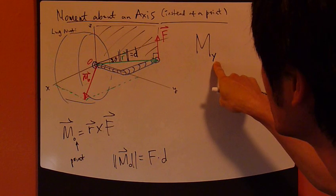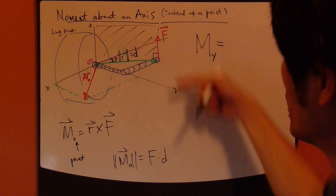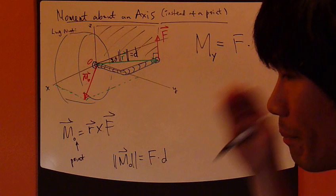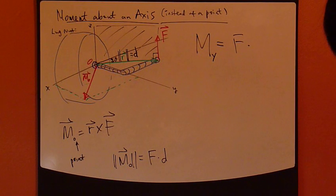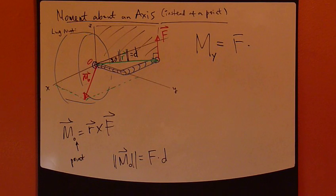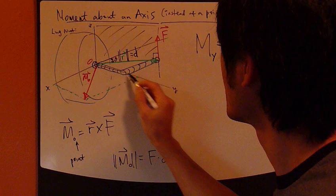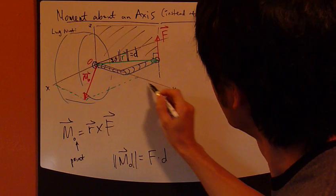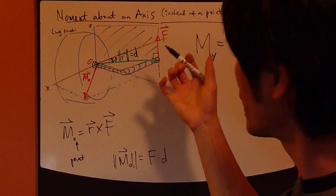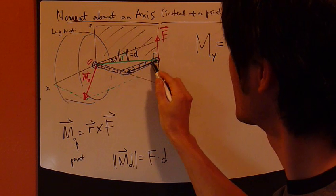But the moment about an axis, this Y axis, is equal to the magnitude of this force F times the perpendicular distance between this force and the axis. That's it. So if you extend this line of action of this force, then you can measure the distance between this axis, the axis Y, and the force, which is exactly this side right here, this distance.